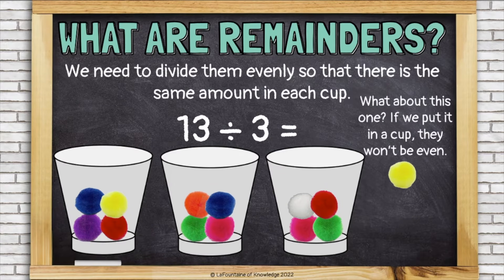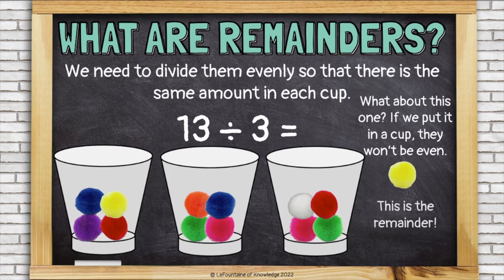What about this one? If we put it in a cup, then they won't be even. Right now they each have 4, and if we put this yellow pom-pom in one of the cups, then one of them will have 5 and the others will have 4. This is the remainder.